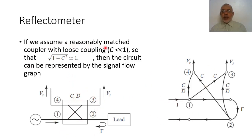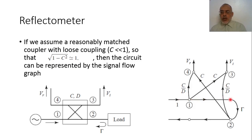Assuming that the coupler is reasonably matched — meaning port 1 is matched to the source and there is no reflection inside port 2 itself — the power going from port 1 goes directly to the load. If there is a reflection from the load, some of that reflected power goes back to port 1.